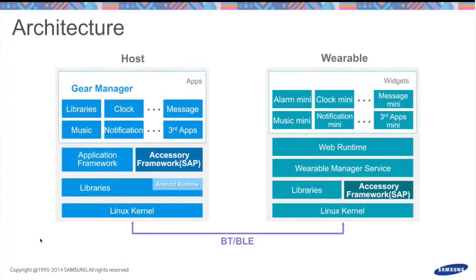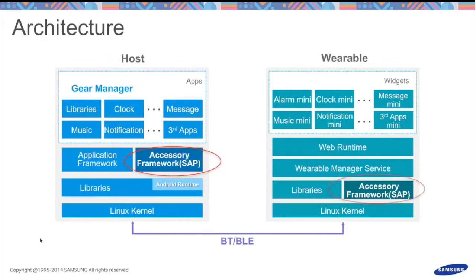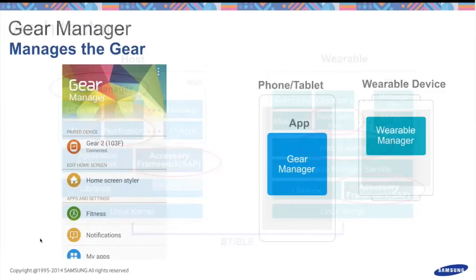These are the two platforms: on the left is the host, which is Android-based; on the right is the wearable, which is Tizen wearable-based. At the very bottom level, both are based on a Linux kernel. Above the kernel in the application framework is a component called Accessory Framework — SAP. This component lets you send data bidirectionally between the host and the wearable without going through notifications. You can also send notifications. There are two components, one on each side, that let you send and receive notifications back and forth.